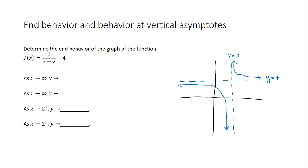We want to continue with this function and determine the end behavior and the behavior at the vertical asymptotes. So we have this statement to complete. As x goes to infinity, y approaches what?